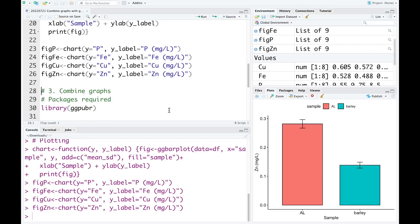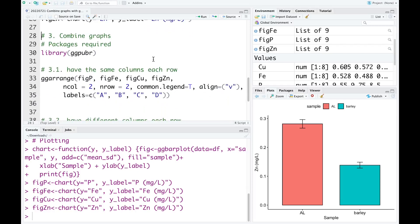Normally with this type of data, I will combine them into a figure when I report them. So how to combine these four figures into one figure? I'm going to show you now. To combine the graphs, we need the package ggpubr. We already loaded this package above, but I still want to run it again.